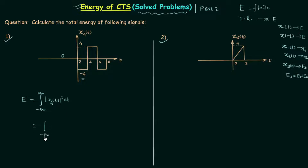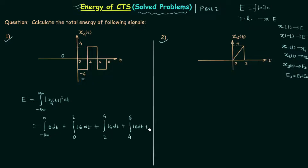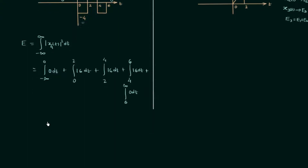From minus infinity to zero the signal is zero. From zero to two, signal is minus four — the modulus of minus four is four, and its square is sixteen, giving 16 dt. From two to four, signal is four, so again 16 dt. From four to six, signal is minus four, so again 16 dt. From six to infinity, signal is zero, giving zero.